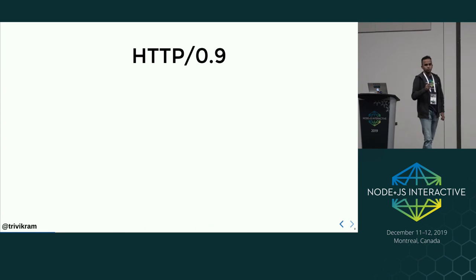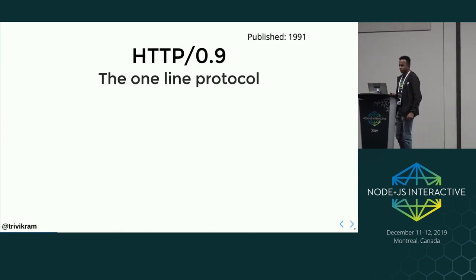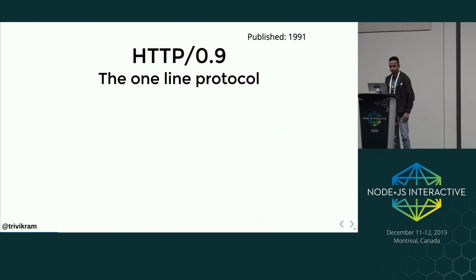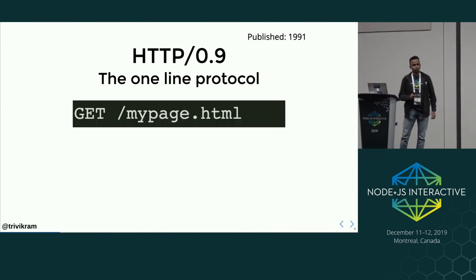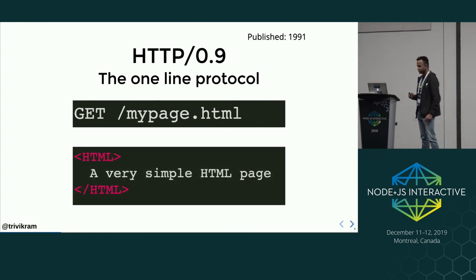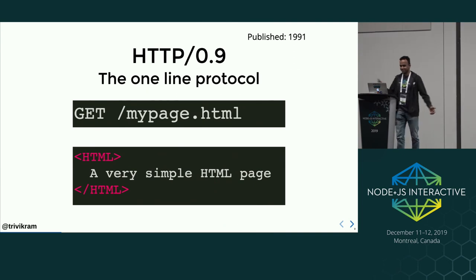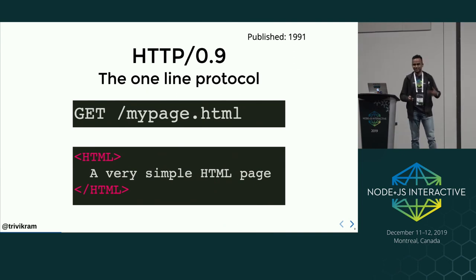Let's start with HTTP/0.9, which was published in 1991. It was very simple — just a one-line protocol. You send GET mypage.html and you get mypage.html. Life was so simple back in 1991, but things had to get complicated.